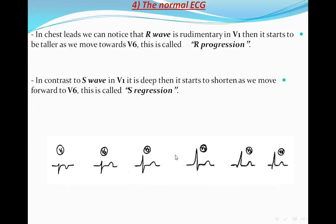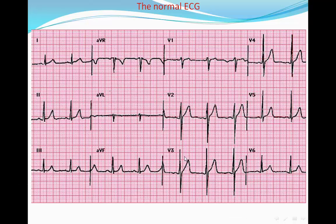This is called R progression and S regression. In this example of a normal ECG, most of the limb leads are positive by their R waves except AVR. AVL is also to the negative side, but at least its P wave is positive. In AVR, the P wave is negative. On the chest leads, the R/S ratio is very low in V1, and the S wave becomes almost absent in V6 while the R is very high.